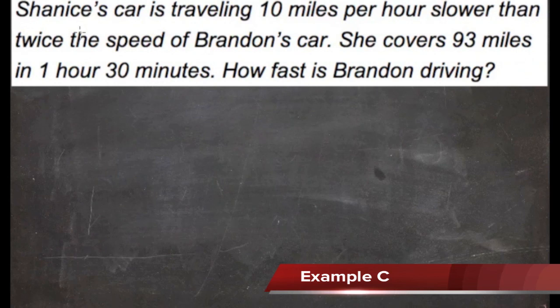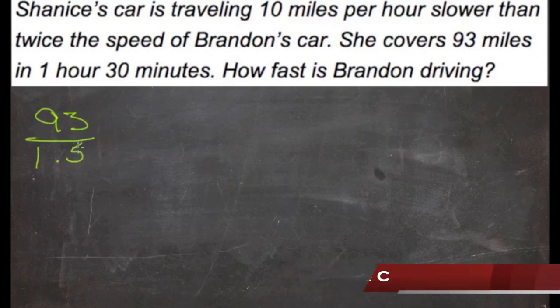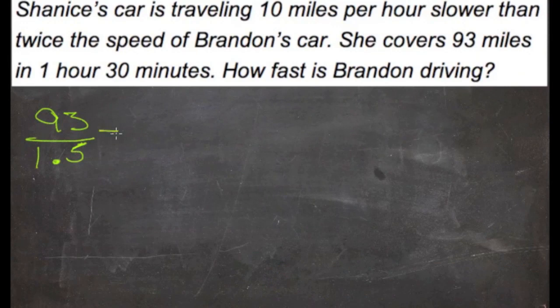So let's actually start by calculating Shanice's speed in miles per hour. It says she covers 93 miles in an hour and a half, so 93 divided by 1.5 should give us her actual speed in miles per hour. 93 over 1.5 is 62, so 62 miles per hour.